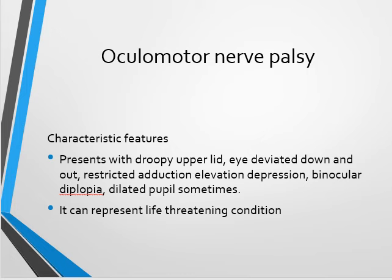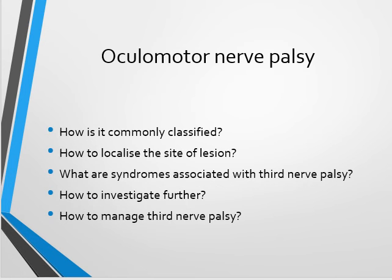On examination of ocular movements, there will be restriction of adduction — the eye will not move toward the nose — and defective elevation or depression of the globe. The only movement that will be normal is abduction, the outward movement of the eyeball. The pupil can be dilated in some patients. The patient may present with binocular diplopia, double vision when looking with both eyes, which disappears when one eye is closed.